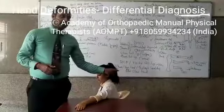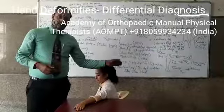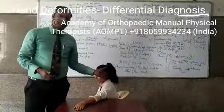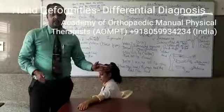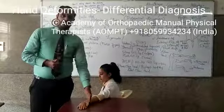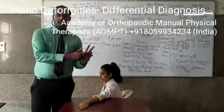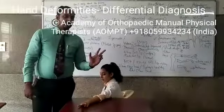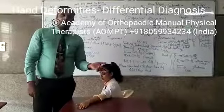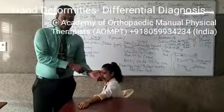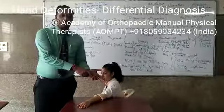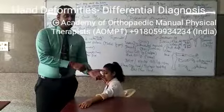It can even be radiculopathies where the root value muscles are at C8 T1. If it is thoracic outlet syndrome or Klumpke's paralysis — brachial plexus lower trunk injury — the ulnar nerve will get affected, and the patient will have ulnar claw hand. Even cubital tunnel syndrome or Guyon's canal entrapment neuropathy can lead to ulnar claw hand.